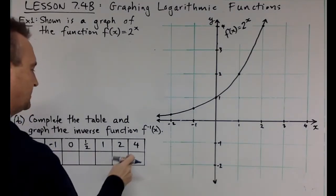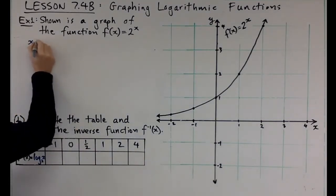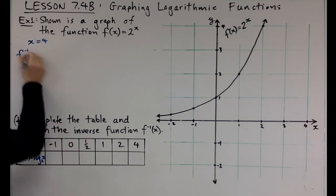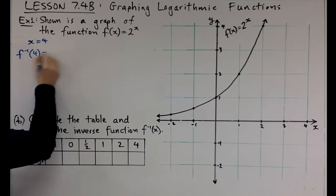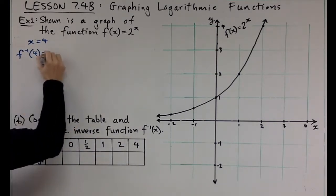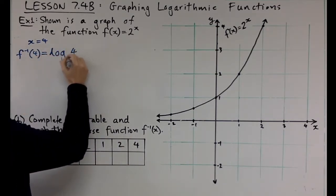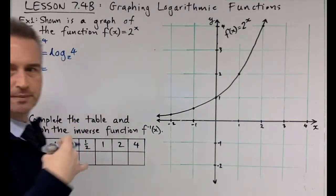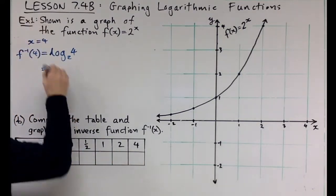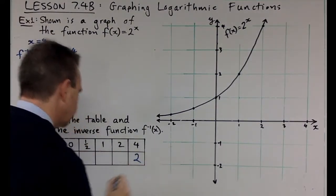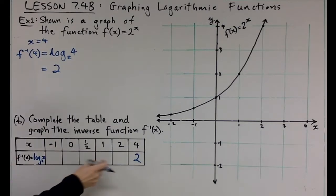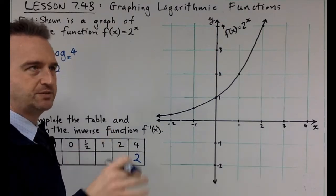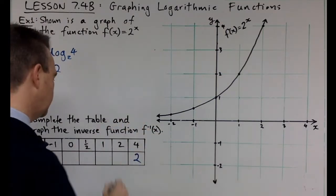For x equals 4: f inverse of 4 is log 4 base 2. We think, 2 to the power of what equals 4? 2 squared equals 4, so the answer is 2. For x equals 2: log 2 base 2 means 2 to the power of what equals 2? That's just 1.